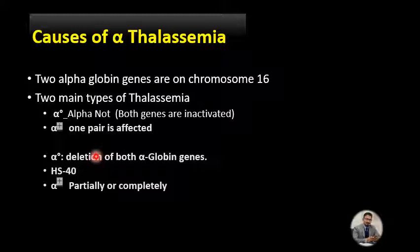Alpha-plus thalassemia is the form in which only one of the pair of alpha genes is affected. The molecular basis is more complicated: in some cases it results from a deletion removing one of the linked pair of alpha globin genes while leaving the other intact. In other cases both alpha globin genes are intact, but one has a mutation that partially or completely inactivates it.